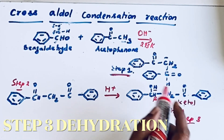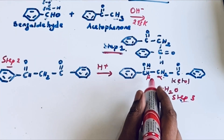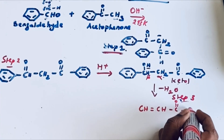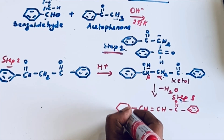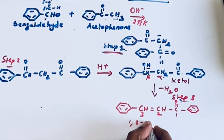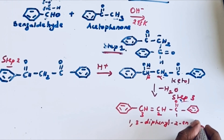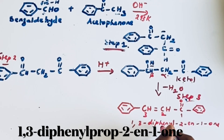Whenever dehydration takes place, this OH group and the alpha hydrogen are lost. Due to the removal of H2O we get CH double bond CH, then C double bond O, then one phenyl group — and on the left side also we have one phenyl group. Numbering positions 1, 2, 3: there are two phenyl groups, so it is 1,3-diphenyl, and in the second position we have a double bond — so the cross aldol condensation product is (E)-1,3-diphenyl-2-propen-1-one. This is also called benzalacetophenone. Thanks for watching.